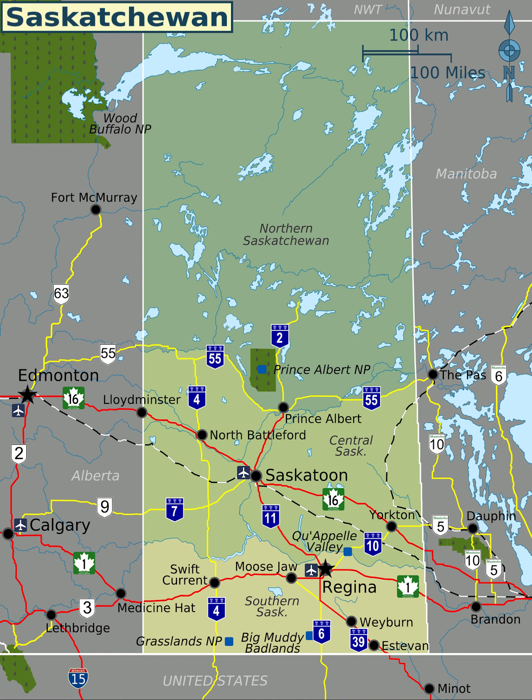Southern Saskatchewan contains another area with sand dunes known as the Great Sand Hills, covering over 300 square kilometers. The Cypress Hills, located in the southwestern corner of Saskatchewan, and Killdeer Badlands, Grasslands National Park, are areas of the province that were unglaciated during the last glaciation period, the Wisconsin glaciation.